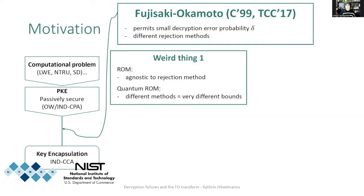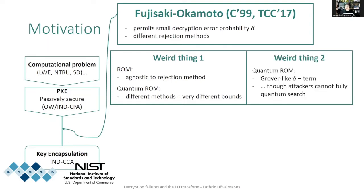The first thing is that while random oracle model results are kind of agnostic to the rejection method — meaning regardless of whether you return bottom or a pseudorandom value the security bound does not change — in the quantum random oracle model, implicitly rejecting variants had vastly better security bounds than explicitly rejecting variants.